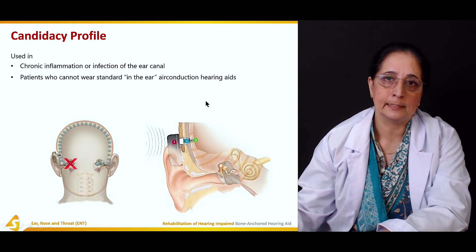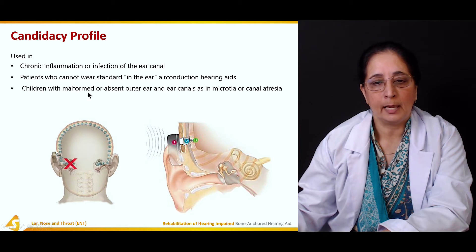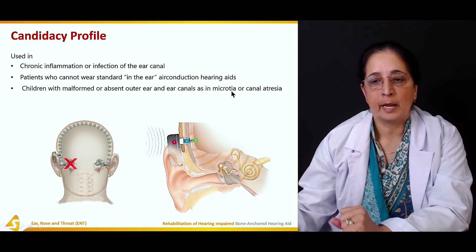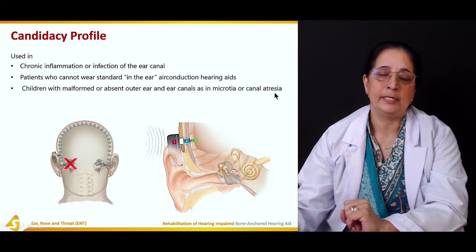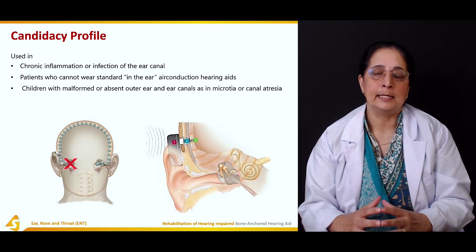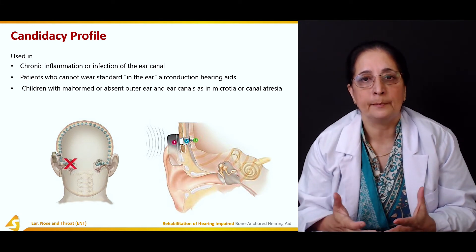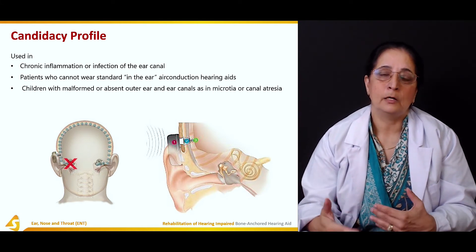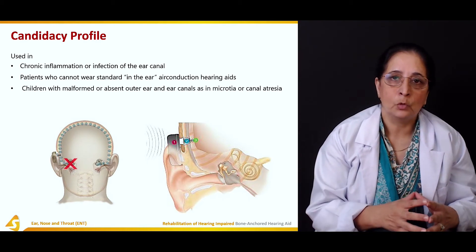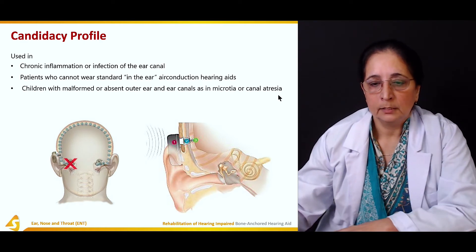Another indication is children with malformed or absent outer ear and ear canal, such as microtia or atresia. If children are born with congenital abnormalities like a very small ear or complete absence of the ear, conventional hearing aids cannot be used and we must use bone anchored hearing aids.